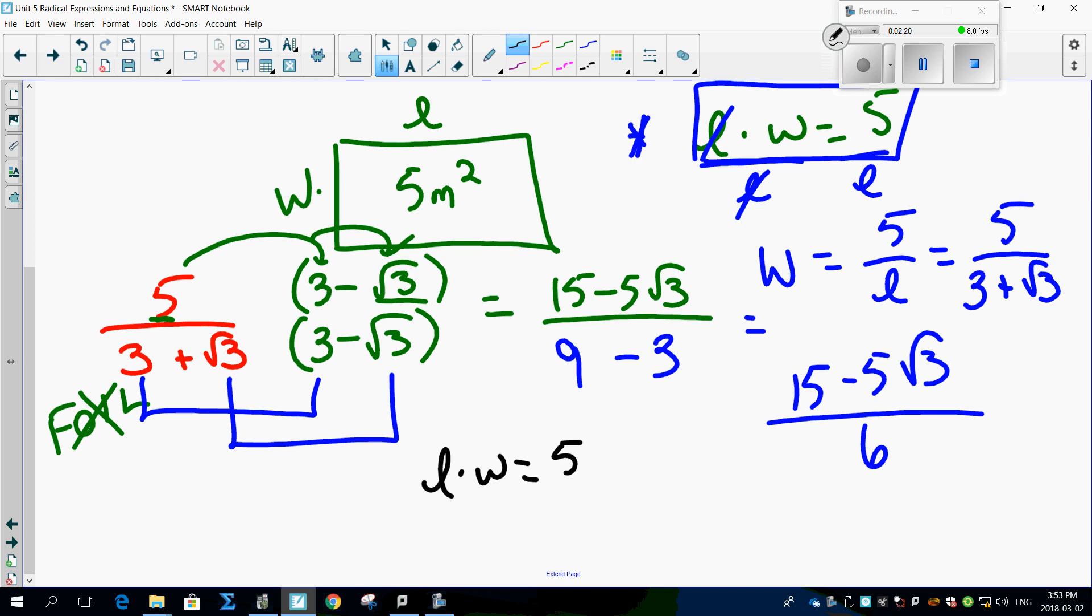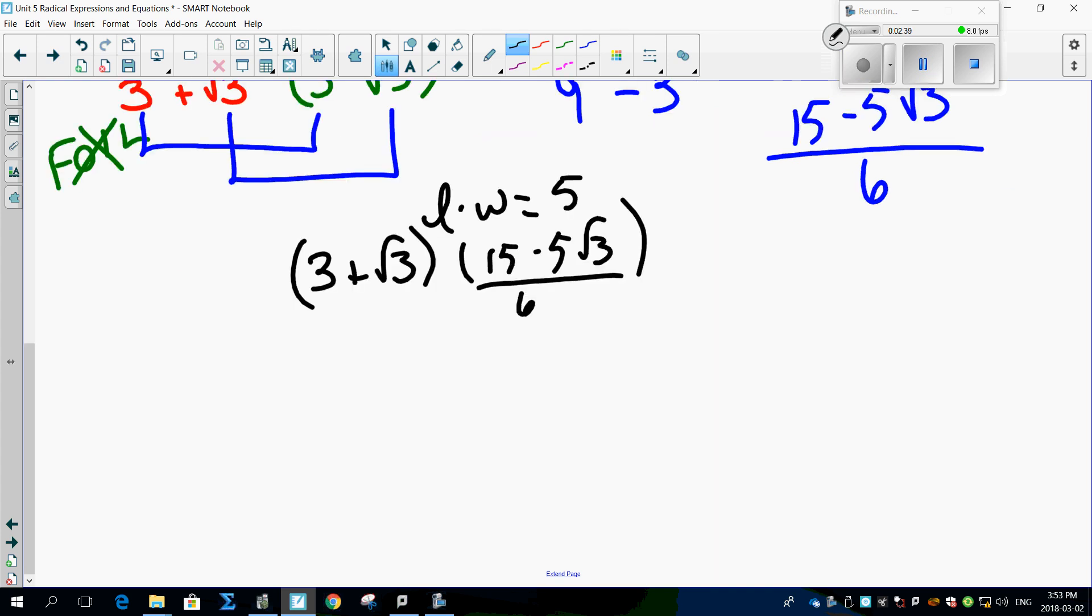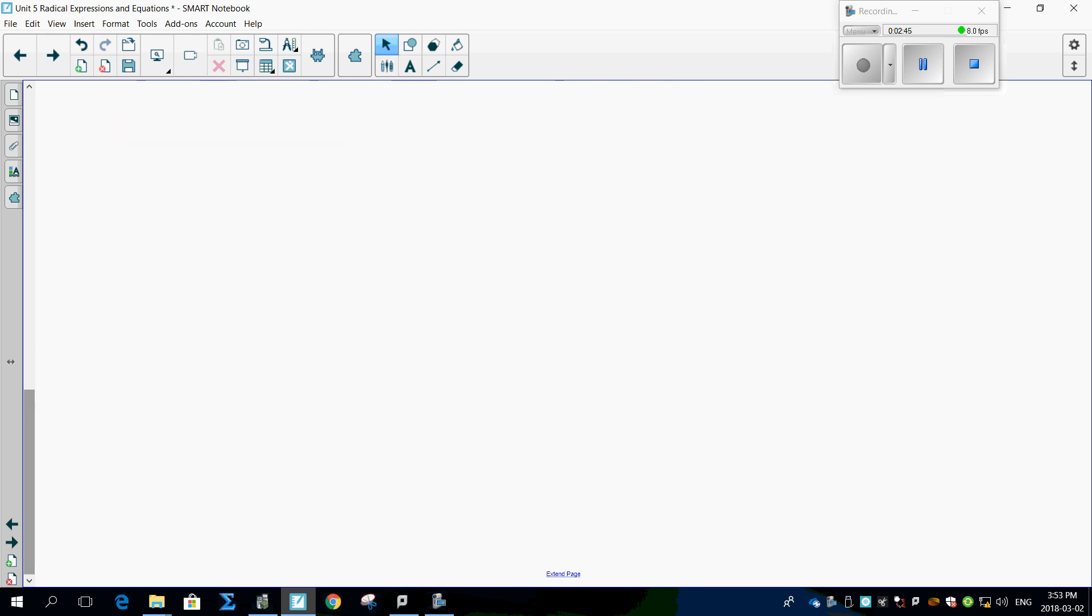So I'm glad you're asking me that, because you know length times width has to equal 5. Let's take that length, the length which we knew was 3 plus root 3, right? And the width, which we just figured out to be 15 minus 5 root 3 over 6. Oh my goodness. That's just gross, isn't it? Well, not so bad. Watch what happens.